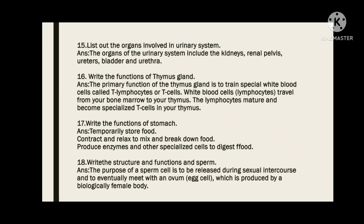List the organs involved in the urinary system: kidneys, renal pelvis, ureters, bladder, and urethra.